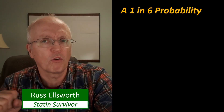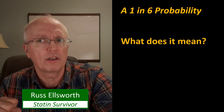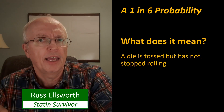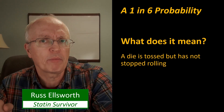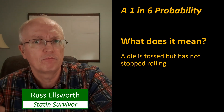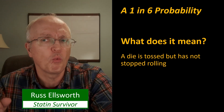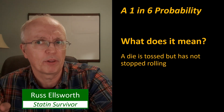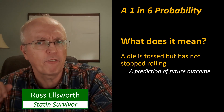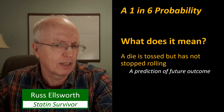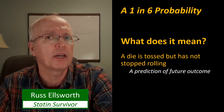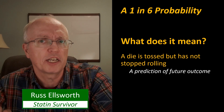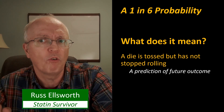Suppose we're going to roll a dice, and we want to know what is the probability that it's going to end up with a 4 facing up. Well, we say there's a 1 in 6 probability. So that's a prediction of a future outcome. The dice is still rolling, it hasn't stopped yet, and we say there's a 1 in 6 chance of it being a 4.